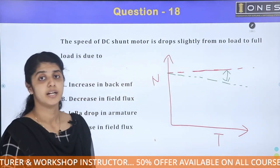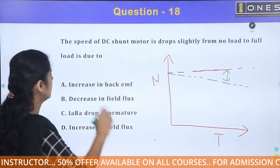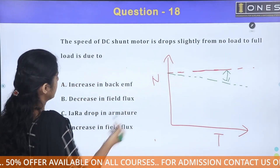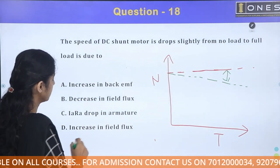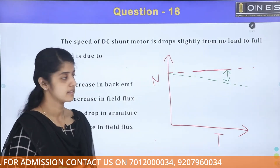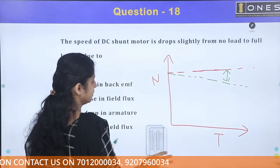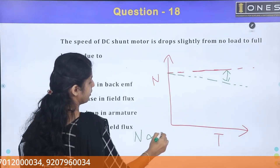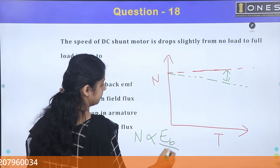The key options are: increase in back EMF, decrease in field flux, IR drop in armature, or increase in field flux. The speed formula is N proportional to Eb divided by flux.